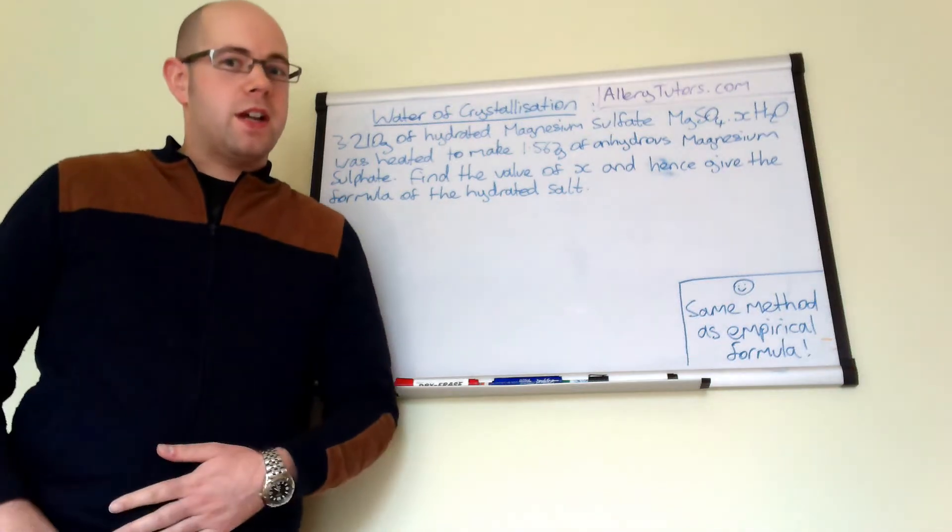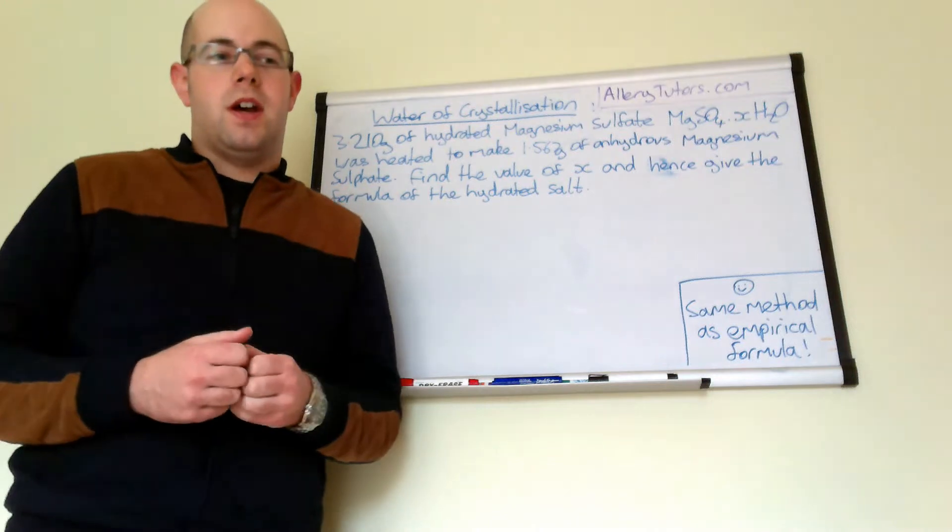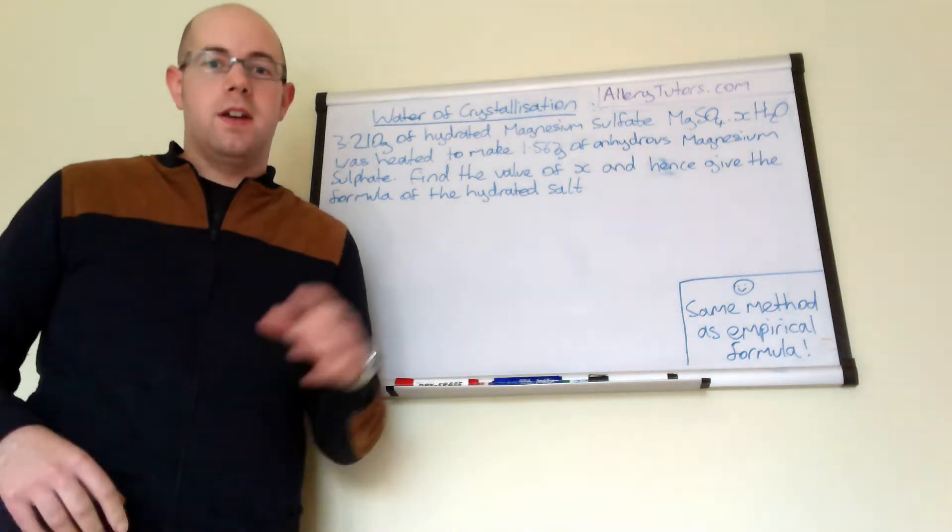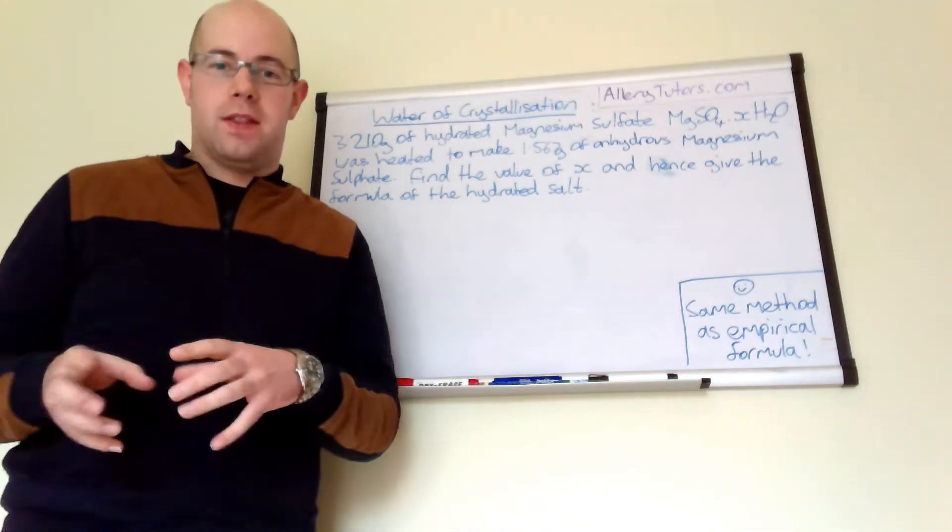Water of crystallization, the best way to describe it is if you have a sponge, a sponge has a mass. Now if you put that sponge in water, the sponge gets heavier because it has the mass of the original sponge and the water.